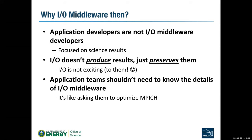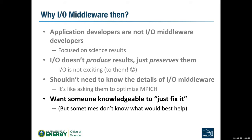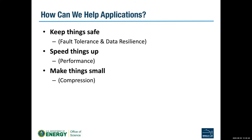Application teams shouldn't need to know the details of IO middleware — it's like telling an app team to go optimize MPI; you don't do that. You try to do the communication work inside MPI and just say we took care of that for you. The app teams just want someone knowledgeable to fix it. They trust us, and we work hard to build those relationships to make intelligent decisions. Our goal: keep things safe, speed things up, and make stuff small.